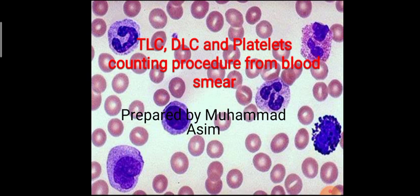If we count these cells combined in blood, we call it total leukocyte count. The other term is DLC — differential leukocyte count. DLC is the count of every WBC type present in our body: what is the percentage of neutrophils, eosinophils, monocytes, lymphocytes, and so on. If we determine the percentage of every cell in our blood, we call it differential leukocyte count.